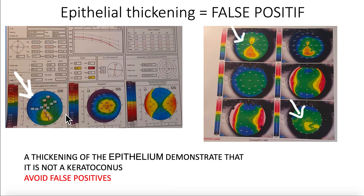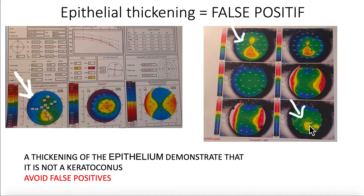On the other hand, in this case, on the Pentacam and the MS39 we have an asymmetry with abnormal indices. But at the steepest point of the cornea, we have a thickening of the epithelium — epithelial hyperplasia. Because of this hyperplasia, it explains the steep area and shows that it is a false positive. The thickening of the epithelium at the apex demonstrates that it is not keratoconus. In this case, we can proceed with keratorefractive surgery — PRK or LASIK, with a preference for PRK.